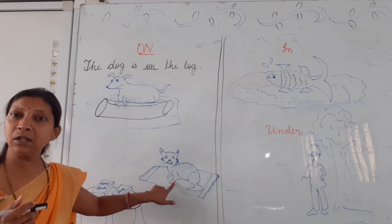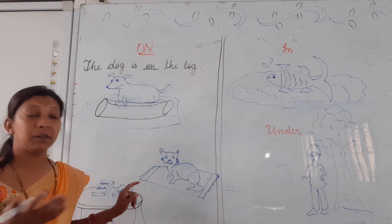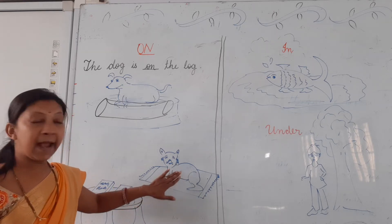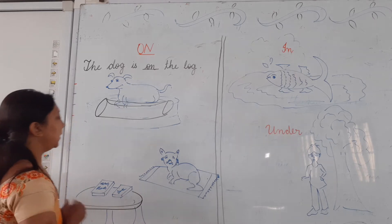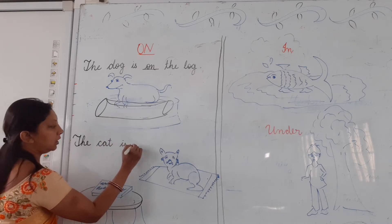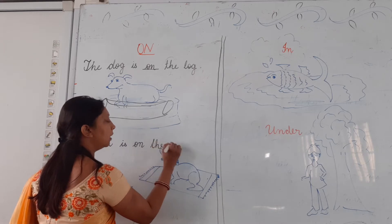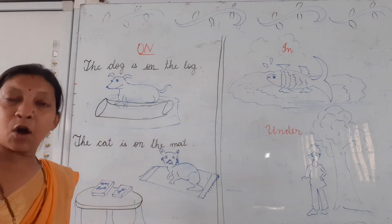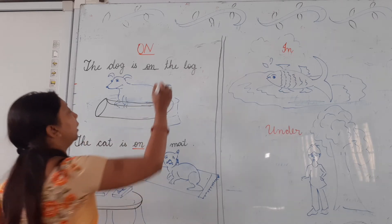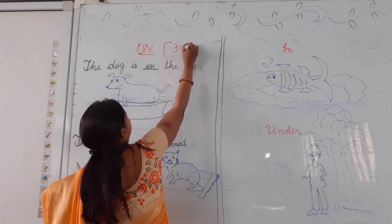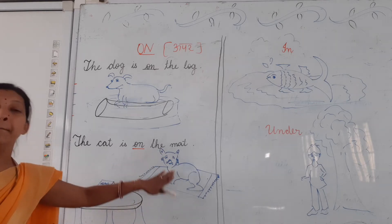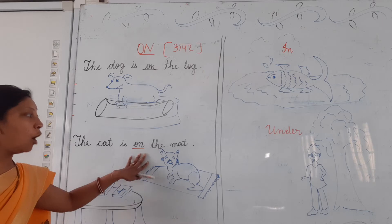Can you see this cat? Cat bhi hai, or mat bhi hai. Where is the cat? The cat is on the mat. The cat is on the mat.